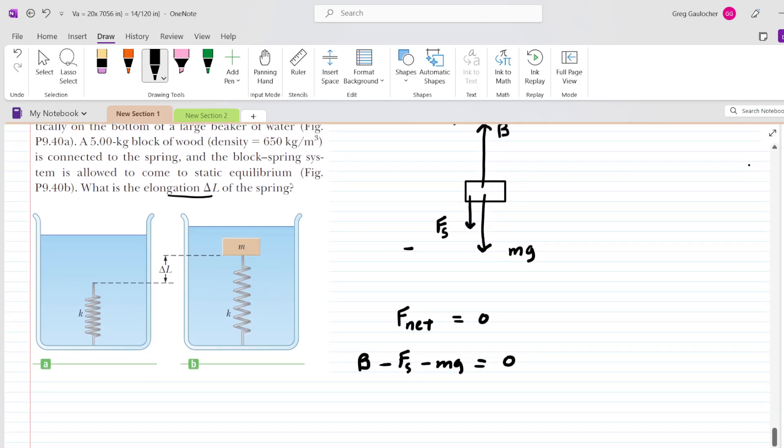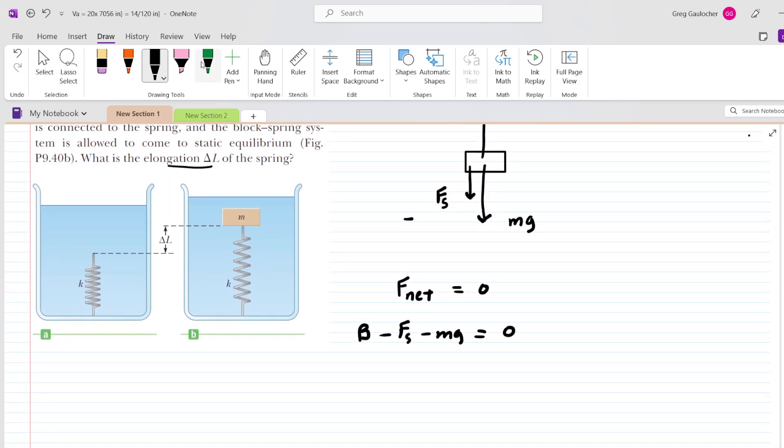Now, we can expand these expressions. And we can begin by expanding the buoyant force. We have learned in this chapter that the buoyant force is going to be equal to the density of the fluid in which the object is submerged multiplied by the volume of the submerged portion of the object and then multiplied by g.